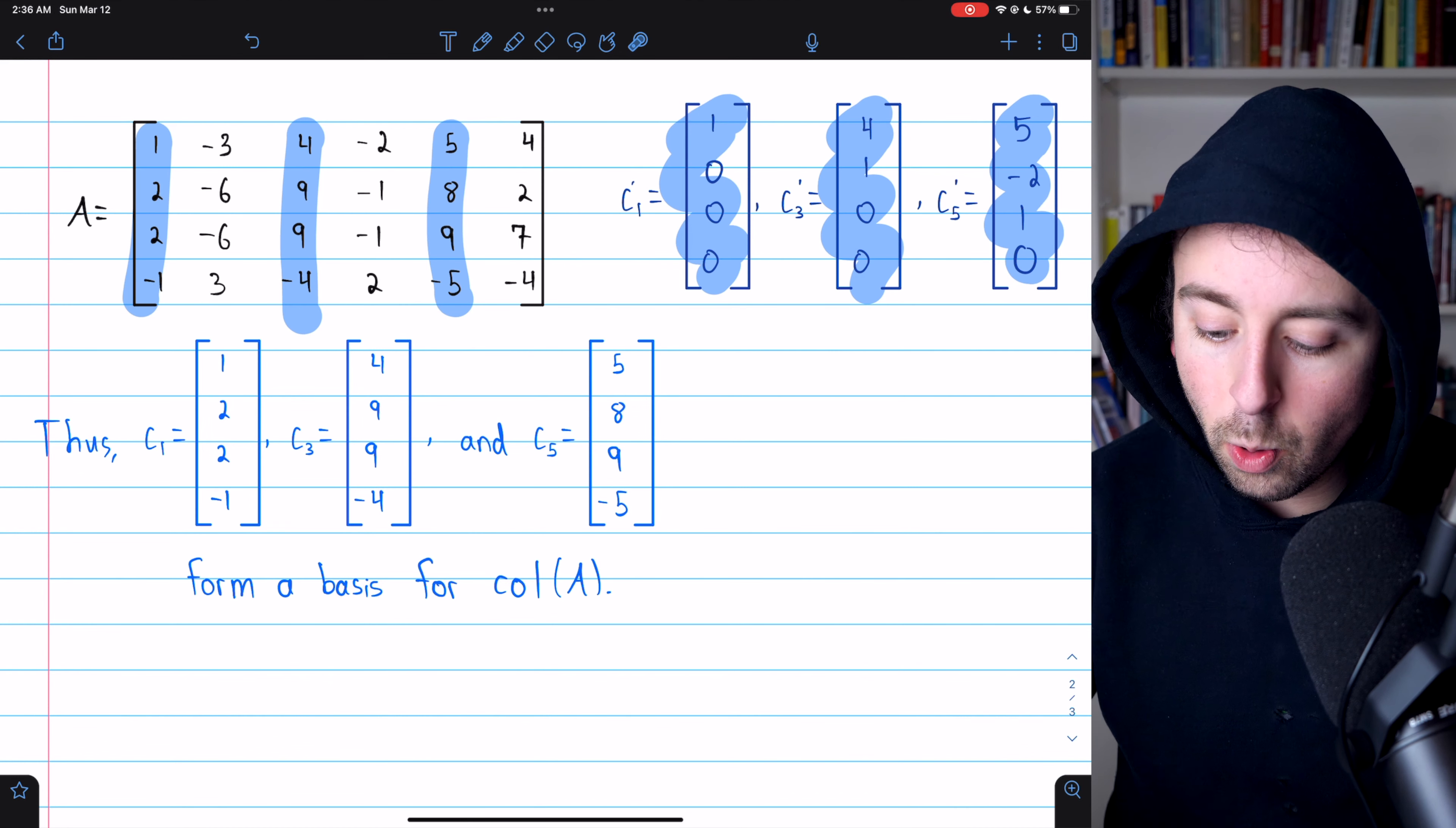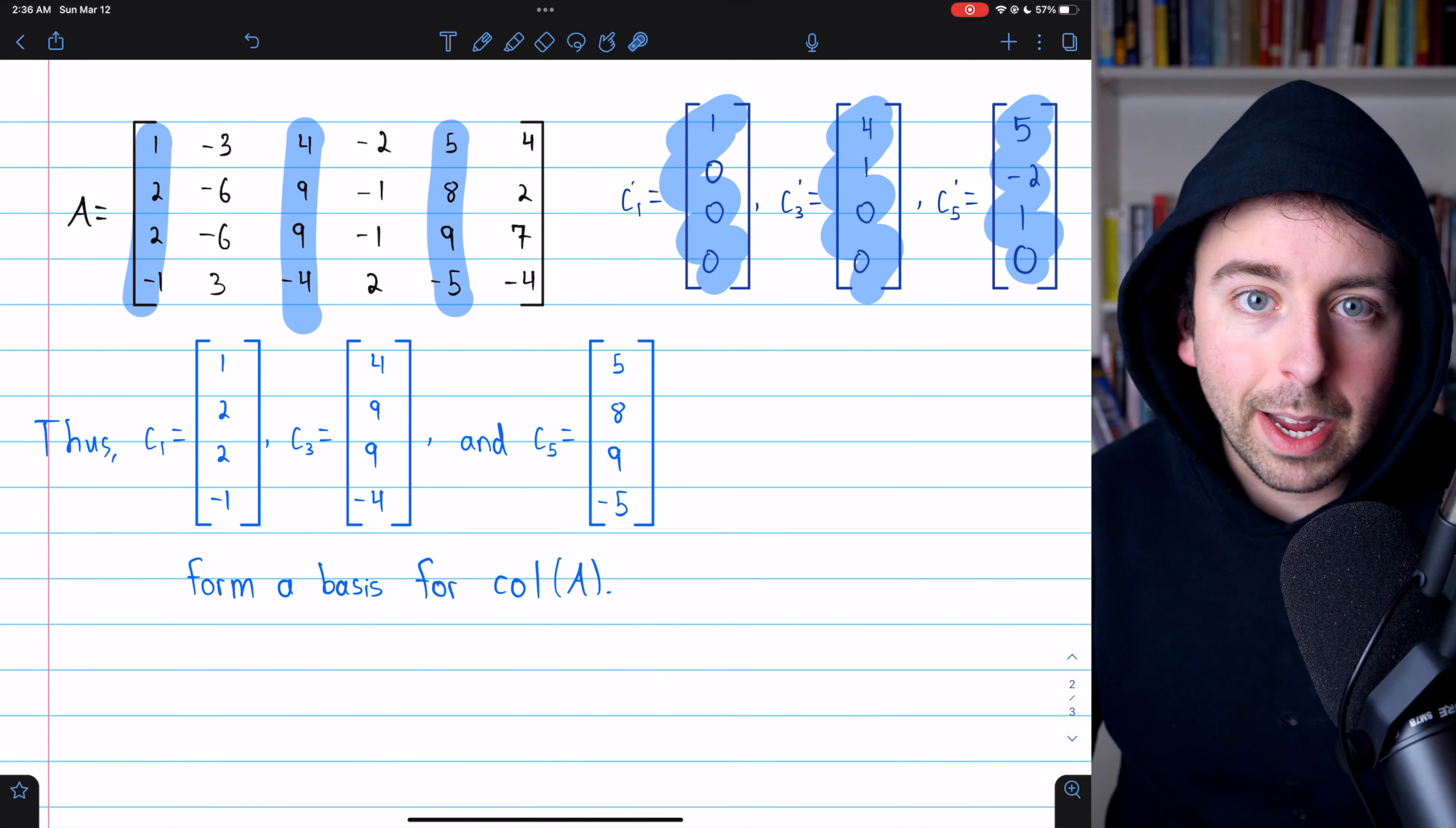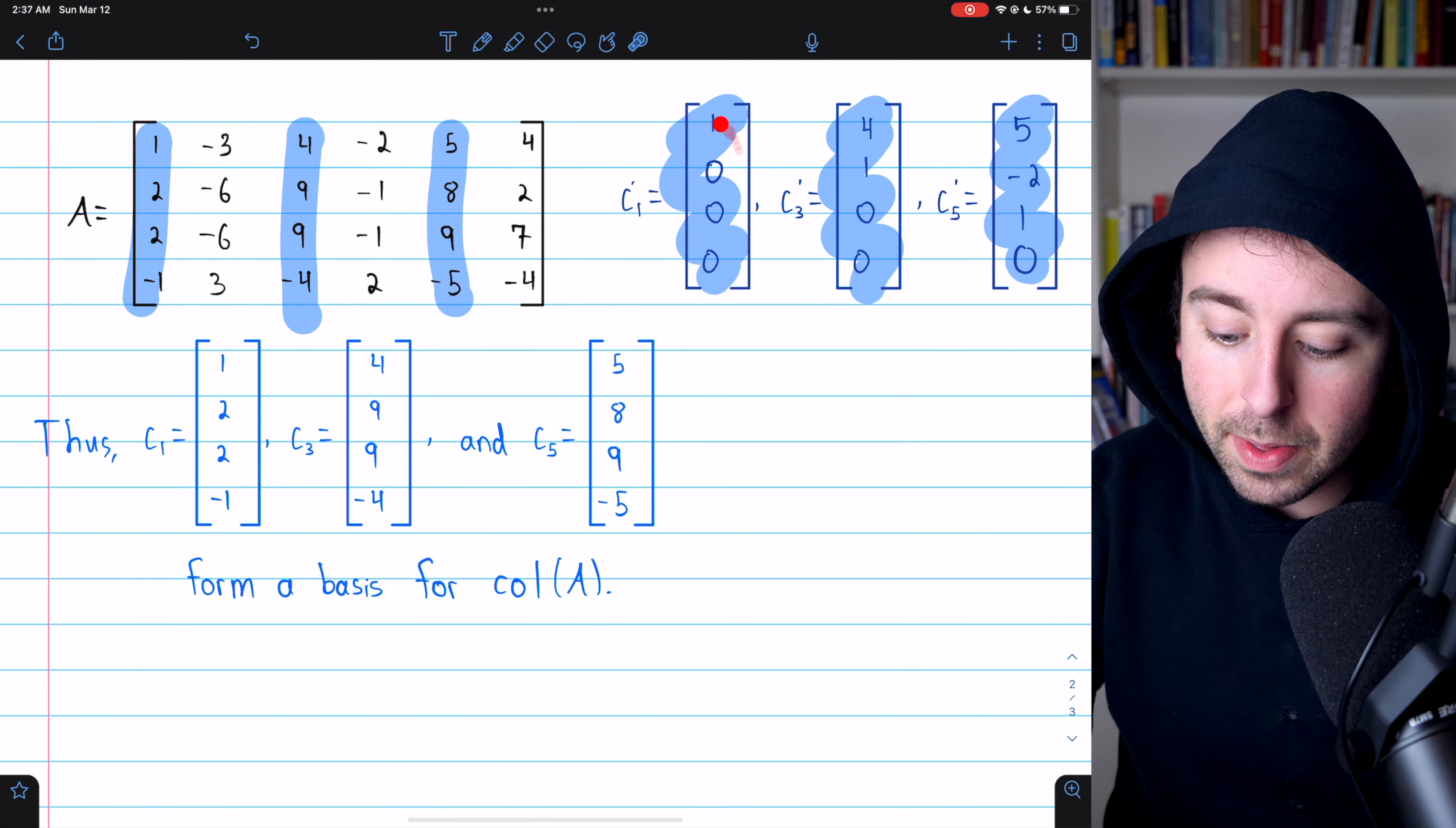And that's it. Once more, it's not the column vectors from the echelon form that make up a basis for the column space, but it's the corresponding columns in the original matrix. The first column from the echelon form matrix contained a leading one,